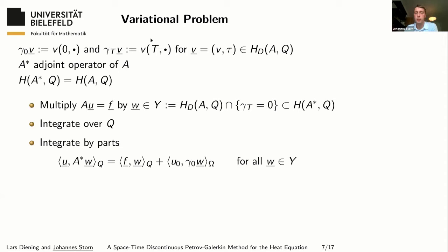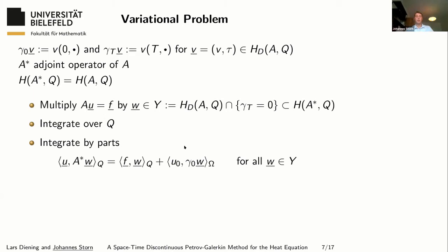Now let me design the variational problem. Let A* denote the adjoint operator of A; this is rather standard, basically the same as for Poisson. We define the adjoint operator and its domain, which in our case equals the domain of the operator A. We multiply the PDE by a test function living in the domain of the adjoint operator equipped with certain boundary conditions, integrate over the domain Q, and apply integration by parts. This leads to a variational problem which is indeed well-posed, but I have no clue how to discretize it. Therefore, I now apply the DPG methodology and start to break the variational problem, which is interesting but very technical, so I'll make it rather short.